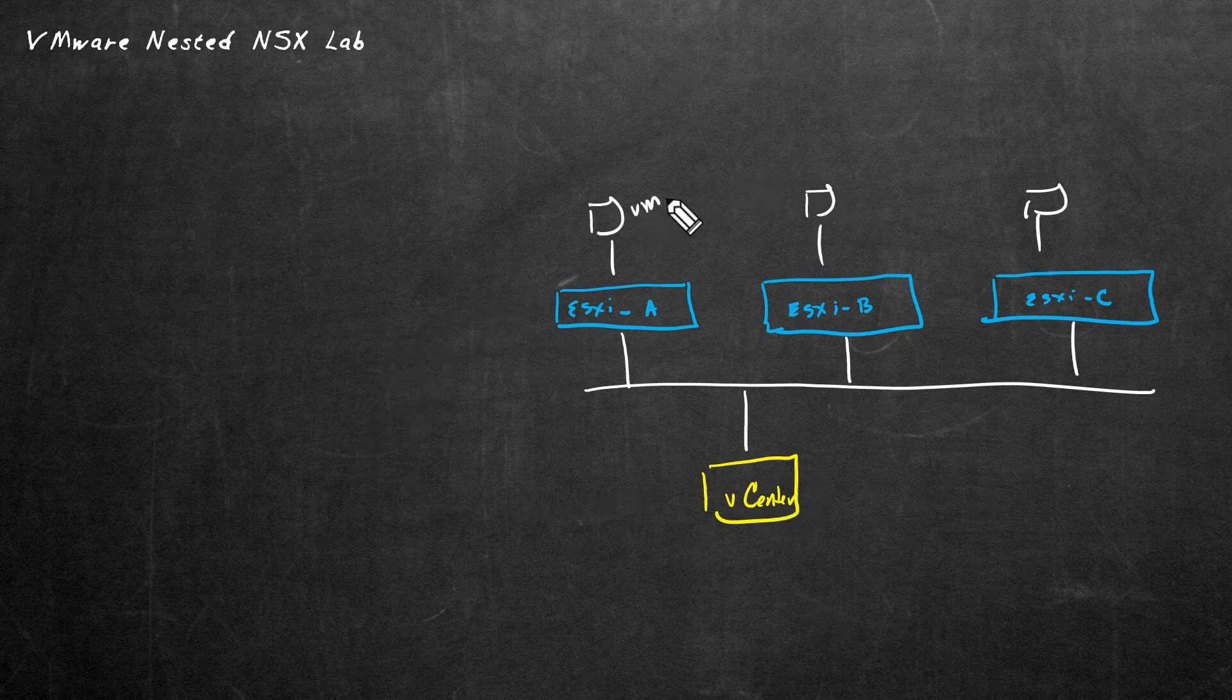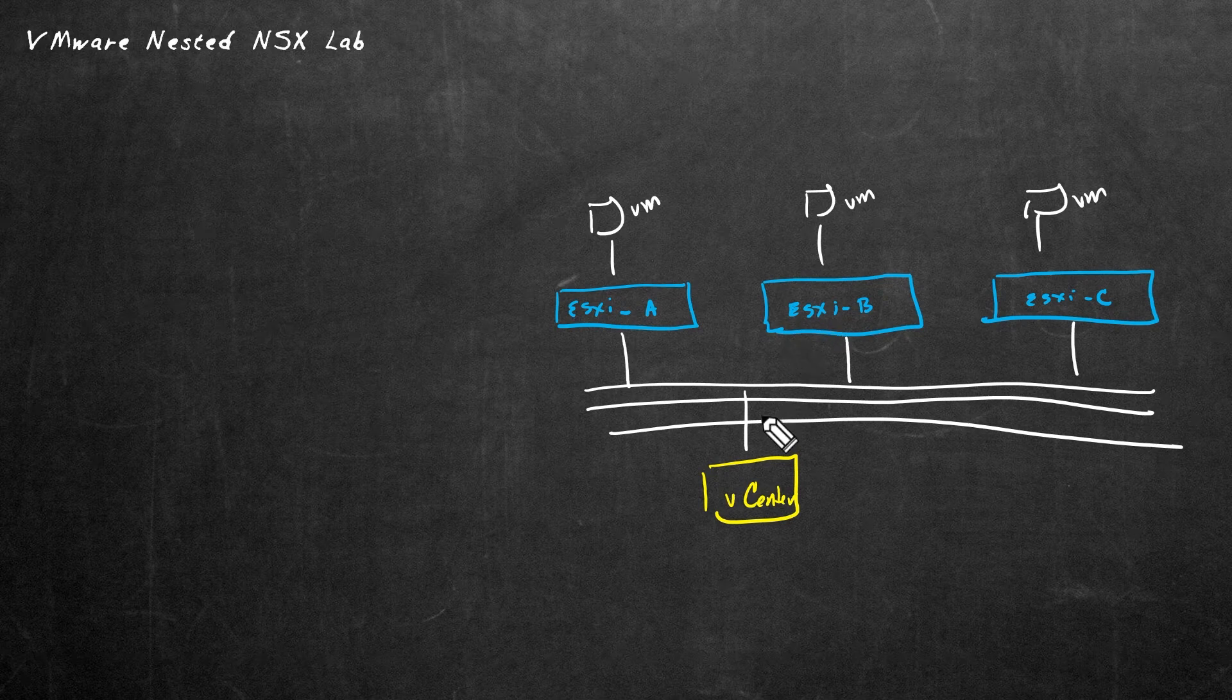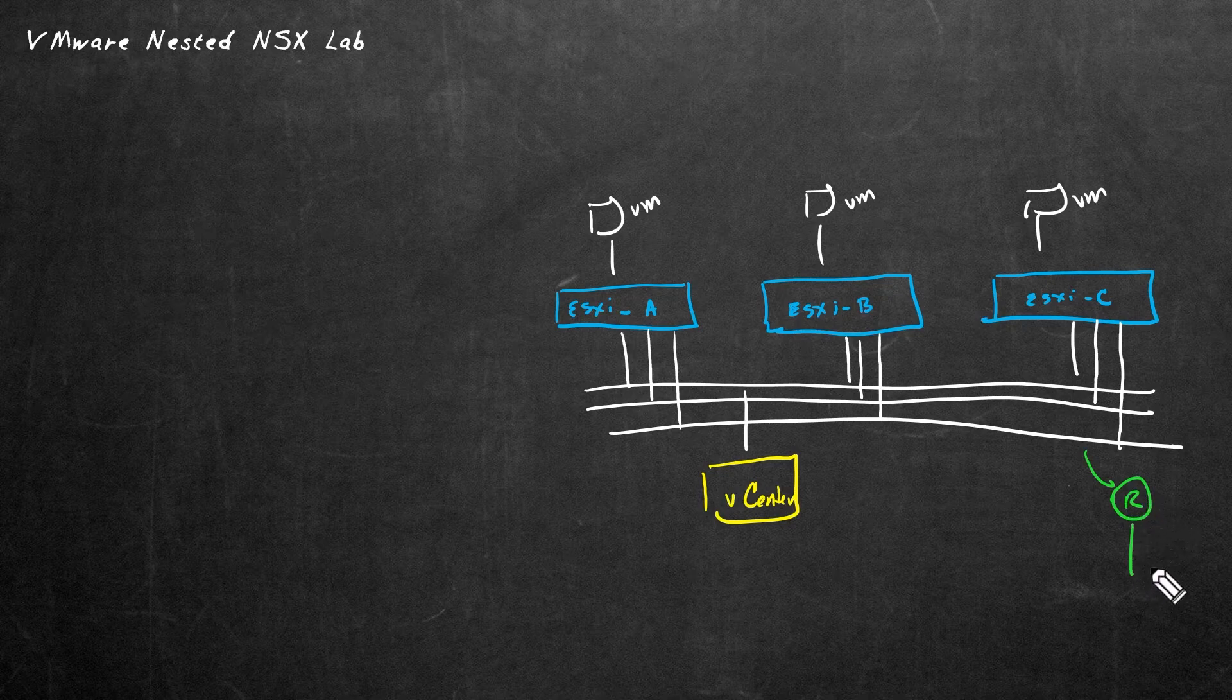So these represent virtual machines running on their respective hypervisors. And for the networking, we could have one or more VLANs that we're connected to and working with. And we would have connectivity to the physical world, usually via a firewall or a router, providing that connectivity.